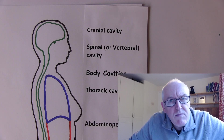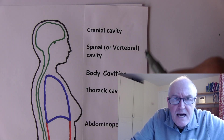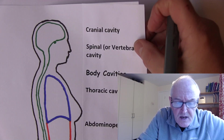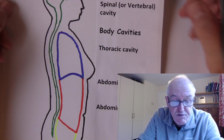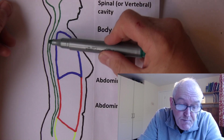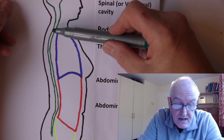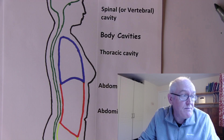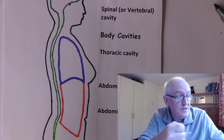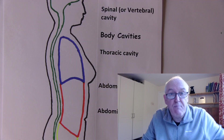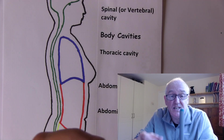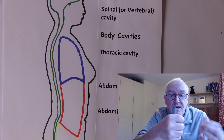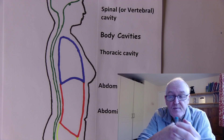The spinal cord is continuous with the brain, so the cavity is also continuous. There is a spinal or vertebral cavity projecting downward so the spinal cord can travel through it. This cavity is surrounded by the vertebrae — the backbones.